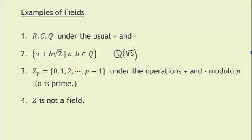A third example is Z_p where p is prime. For example, Z_5 is {0, 1, 2, 3, 4}. You know that it is a group under addition, and that if p is prime, U_p is the same as Z_p just taking 0 out. All of the numbers less than p are relatively prime to p. So Z_p is an abelian group under addition, and if we take out 0, we're left with U_p, which is an abelian group under multiplication. So it is a field.